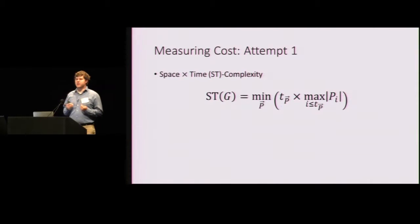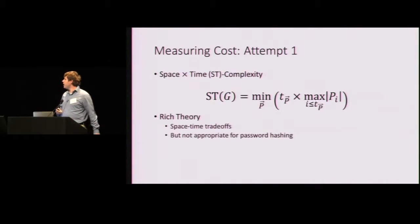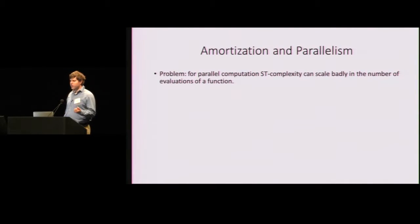All right. So recall that our goal was to force the attacker to lock up a large amount of space for a long time. So how do we formalize this requirement? Well, the first attempt is space-time complexity. So we say that the space-time complexity of a particular pebbling strategy is just the number of pebbling steps multiplied by the maximum number of pebbles on the graph at any point in time. So this is a nice notion, and it has a rich theory. But I claim that this is not an appropriate metric for password hashing.